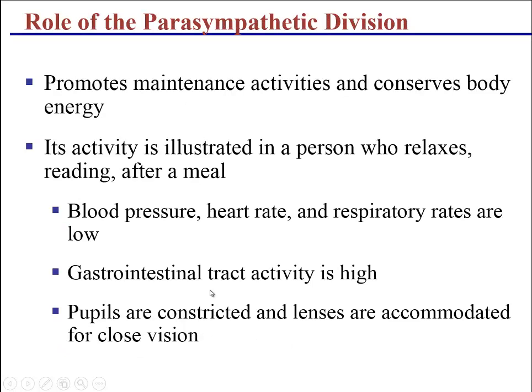The parasympathetic side is the rest-and-digest and relax-and-defecate side of the autonomic nervous system. When a person is under control of the parasympathetic side, blood pressure will be low, heart rate will be low, and respiratory rate will be low, but gut activity will be very high, particularly if we've had a large meal — busy processing and digesting food, breaking it down, and starting its transport from the small intestine into the blood. Our pupils are usually tightly constricted, and our lenses are designed for close vision.